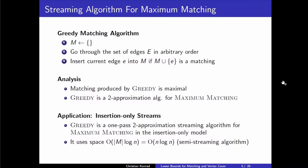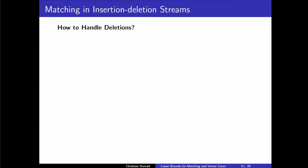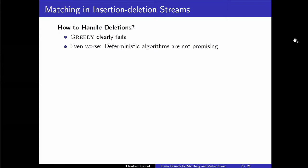If we have deletions, the main question is how to handle them. If we run the greedy algorithm — an edge arrives, we put it in a matching — but the edge might be deleted later on, and in the meantime this edge may have blocked other edges from being inserted. So greedy clearly fails. Moreover, you can argue that essentially any deterministic algorithm will necessarily fail, because it is possible to prove a lower bound showing that even outputting an edge from the input stream in a deterministic algorithm basically can't be achieved.